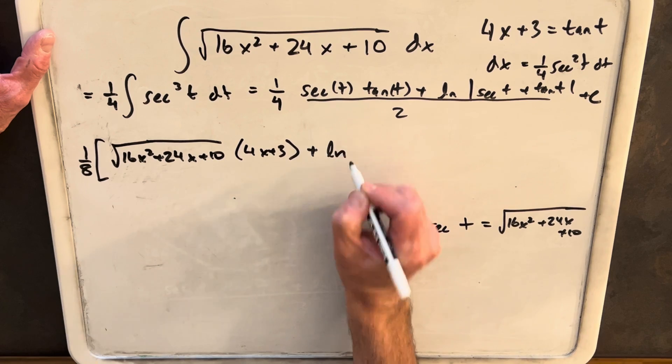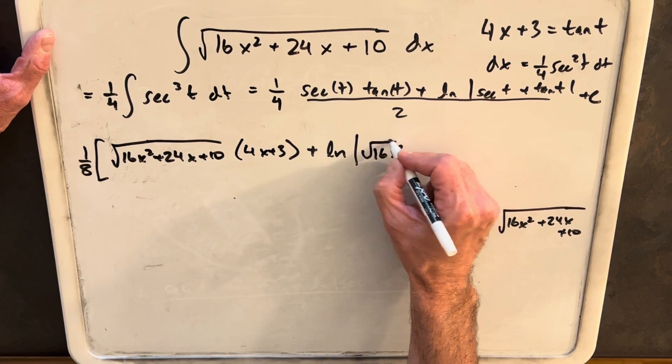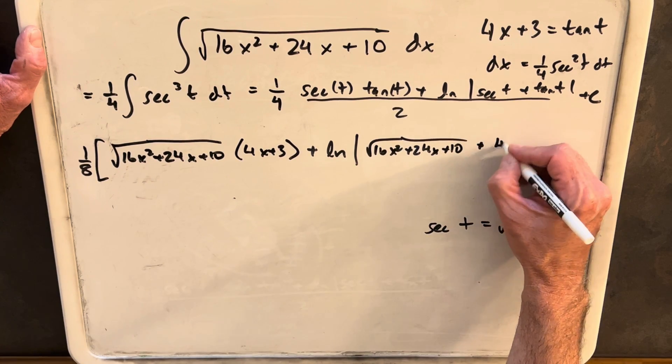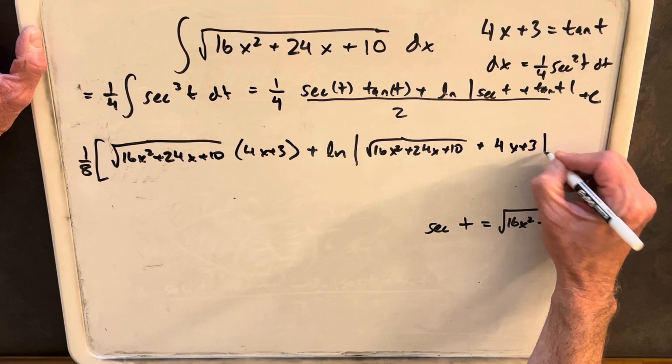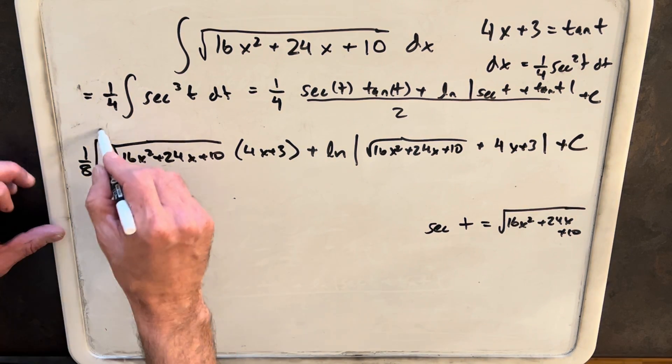Plus we're going to have the ln of our secant again, which is going to be this whole thing. Plus our tangent value, which is 4x plus 3 plus c. And I think we're done.